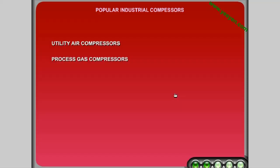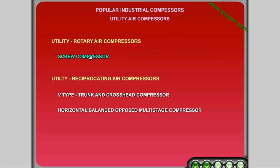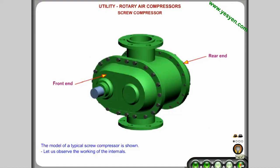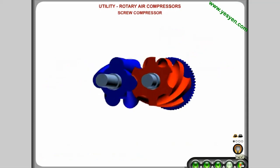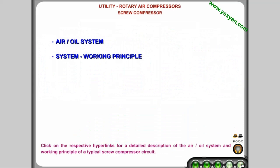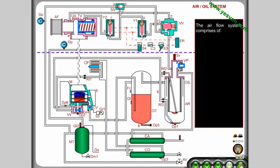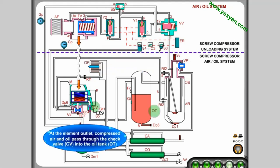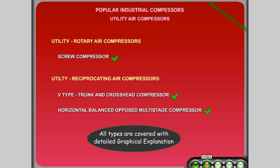The third chapter covers various compressors used in utility services in detail. Some content is forwarded for the tour, with further details and back to index navigation. All types are covered with detailed graphical explanation.